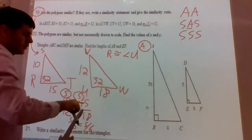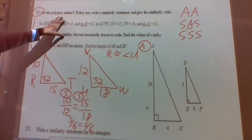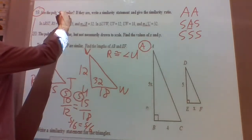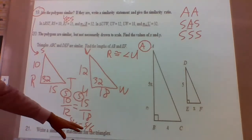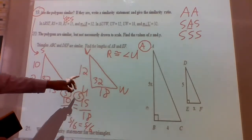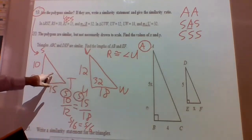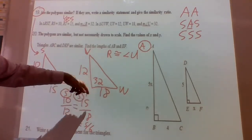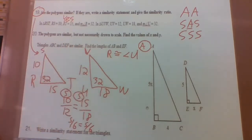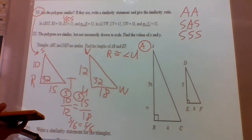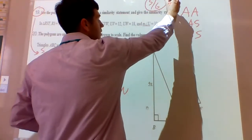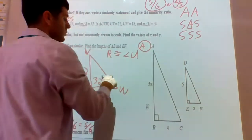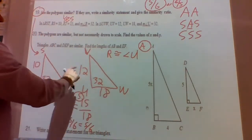We have side-angle-side similarity. So yes, the triangles are similar. The similarity ratio is 5/6 — or 6/5 depending on the direction. The smaller triangle is 5/6 the size of the larger one; the larger one is 6/5 the size of the smaller one. Both 5/6 and 6/5 are fine answers.